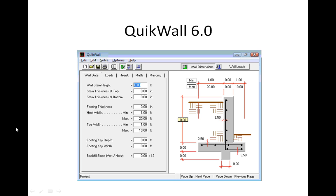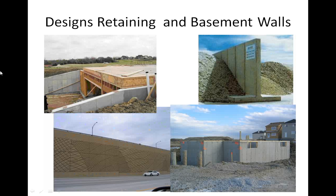QuickWall is a computer program that performs structural engineering calculations required to design a wide variety of flexural walls and footing systems. Typical examples of walls that can be designed with QuickWall include retaining walls and basement walls.